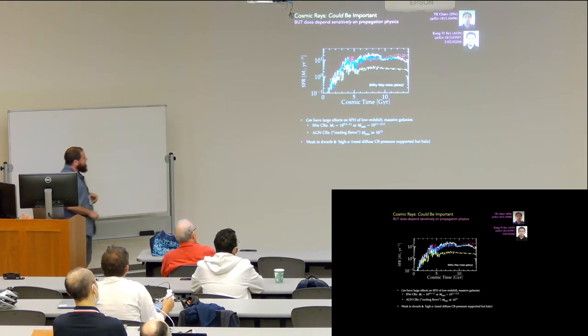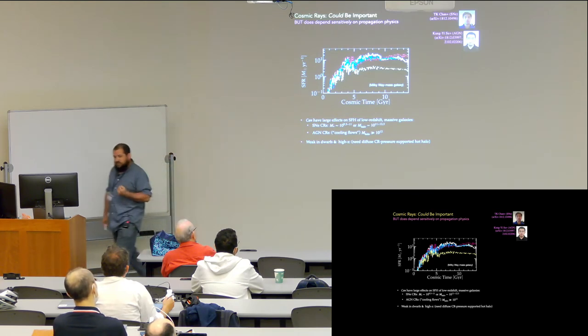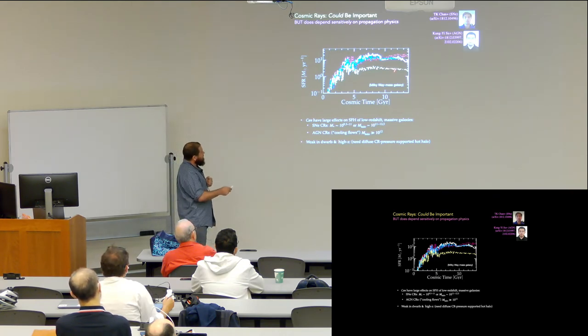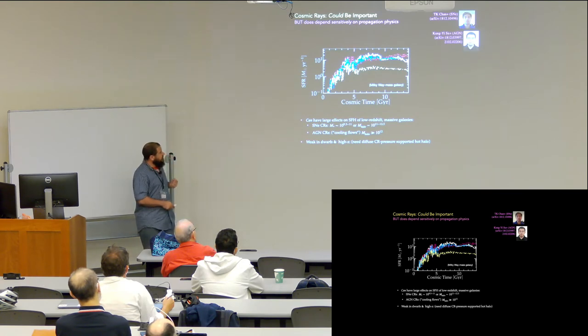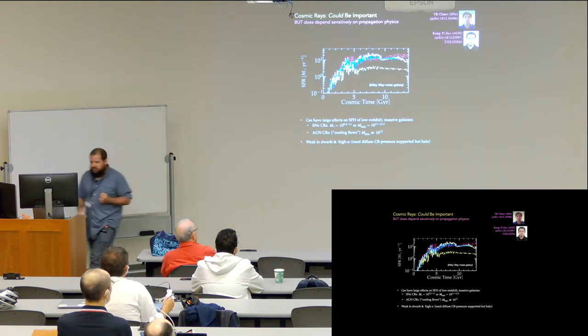So let's take that model and run with it. And again, Dushan already presented this, so I'm just going to remind you, if you take that model and run with it, cosmic rays can, in principle, have a big effect on galaxies. And especially in Milky Way galaxies. As Dushan said, in dwarfs and high redshift galaxies, less so. But in Milky Way mass galaxies, you can, in principle, have a big effect suppressing the star formation from cosmic rays. And this is work TK Chan did. Also, Kun Yi-Sue has done the AGN extension of this.